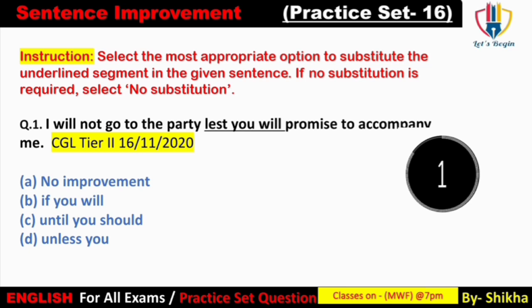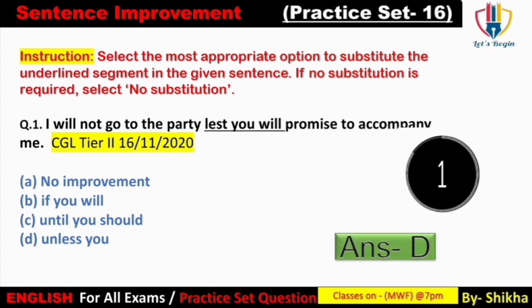Option B: 'I will not go to the party if you will promise to accompany me' — yahan par ek negative word ki zaroorat hai, toh yeh galat ho jayega. Option C mein diya gaya hai 'until you should' — 'should' ka use galat hoga. 'Until' tab lagate hain jab koi mentioned time ki baat karate hain, jaise 'I will stay here until evening.' And option D mein hai 'unless' — unless you promise to accompany me. 'Unless' ka matlab hota hai 'if not,' matlab ki agar tum promise nahi karte ho. Answer: option D — unless.